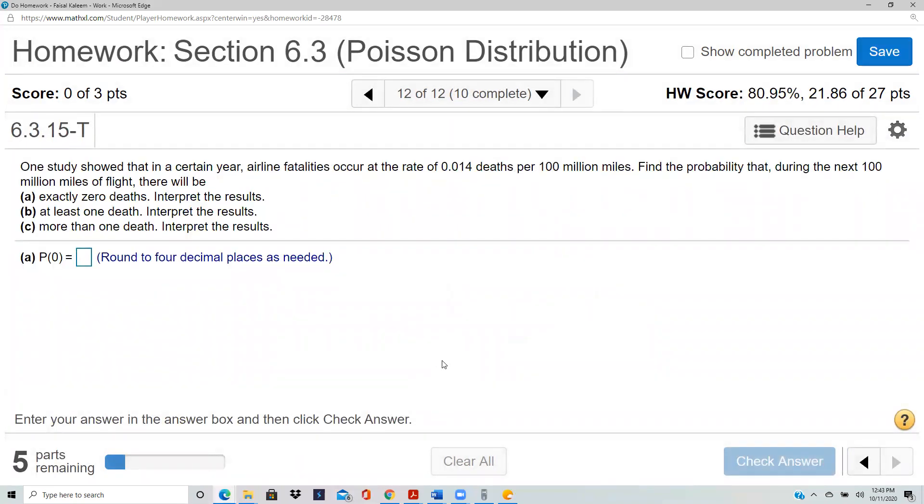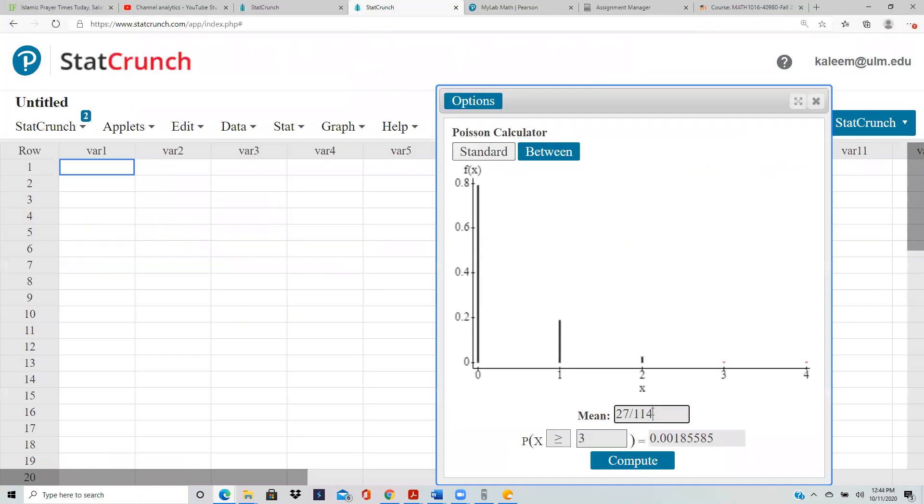One study showed that in a certain year, airline fatalities occur at a rate of 0.014 deaths per hundred million miles. Find the probability that during the next hundred million miles there will be that many. They give the hundred million mile average and ask the question about 100 million miles, so you don't have to do any adjustments to the mean. The mean is 0.014.